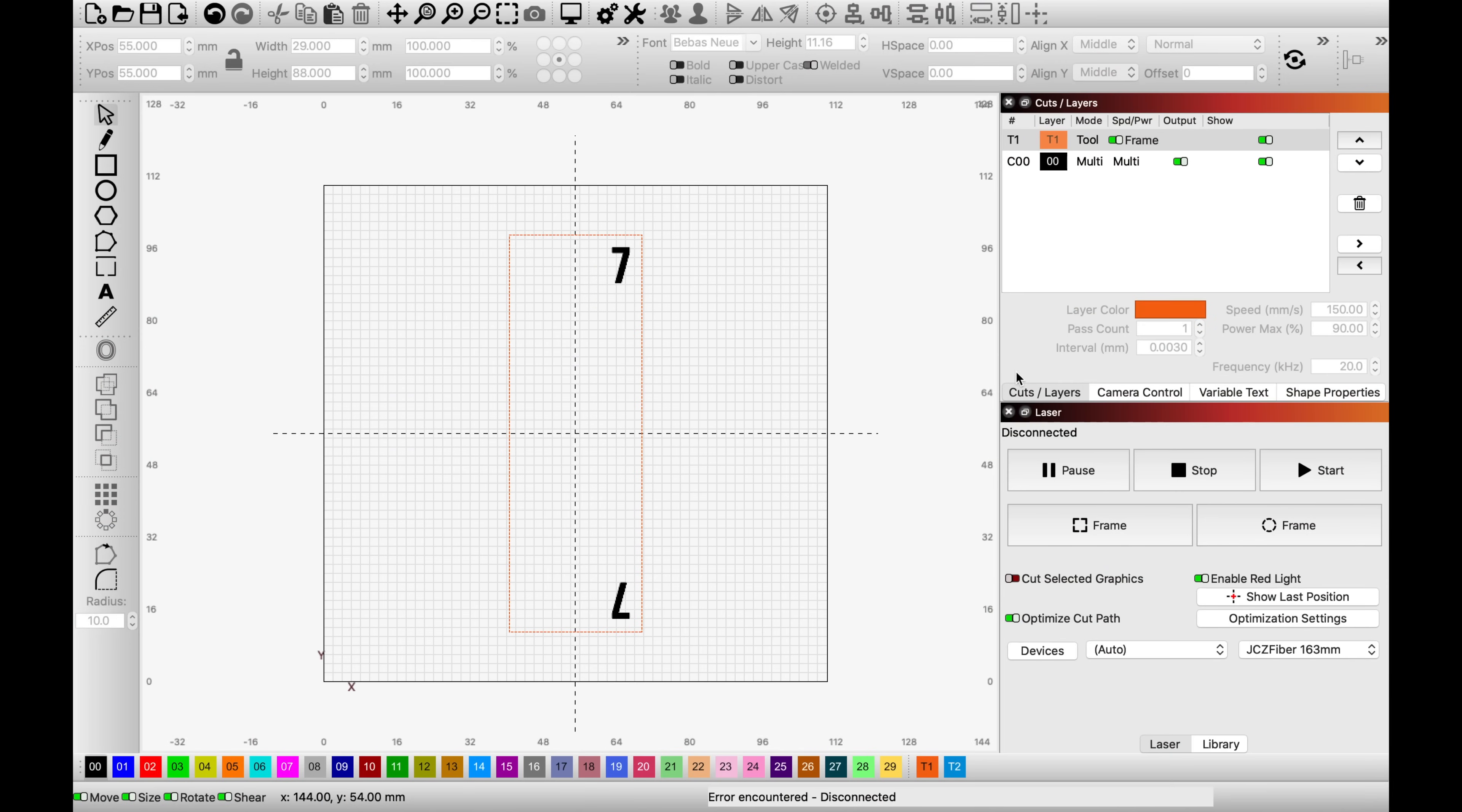We're just going to hop over to the software again very quickly so that I can show you a technique that I use that aids in layout. We've got two different drawing elements here. We've got our rectangle and we've got our numbers. The rectangle represents the exact size of the tool holder and the numbers are the numbers that we're going to burn, obviously.